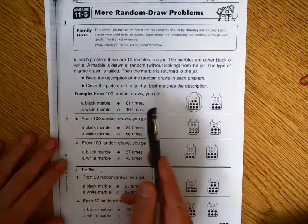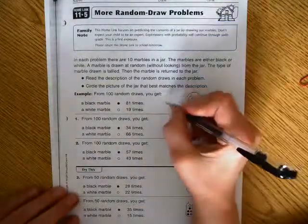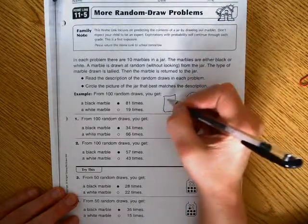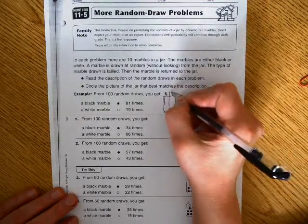From 100 random draws, you get. So you have to think. Basically, somebody drew a marble. They had this jar of marbles. They pulled out 100 times. And the choices were either black or white.